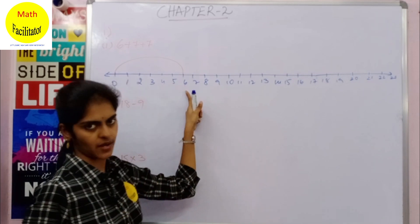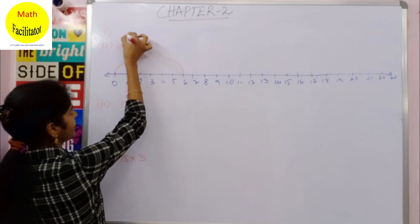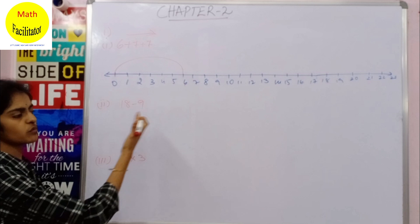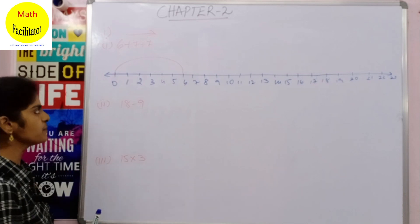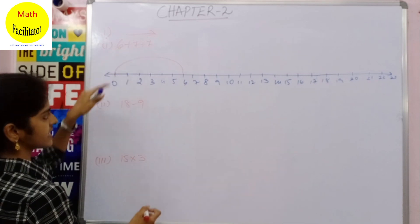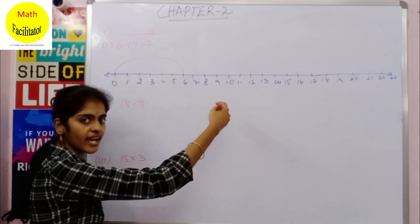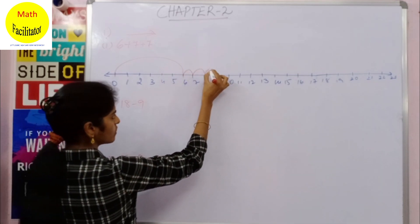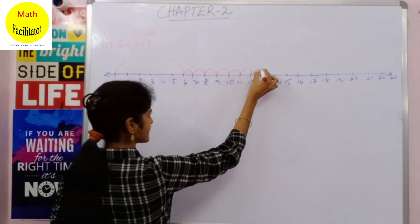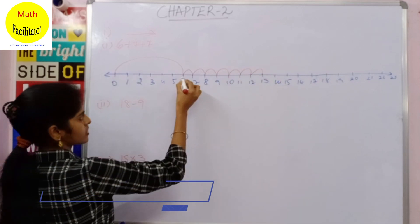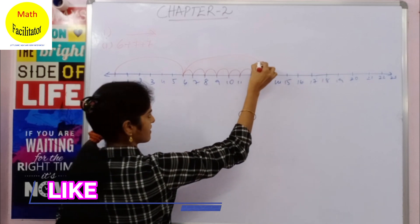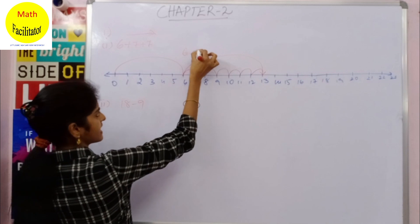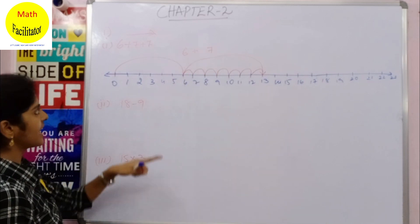You have to move 7 steps on the number line. Since you are adding, addition means you will move to the right on the number line. Subtraction means you will move to the left on the number line. So now you are adding 7 to 6, that means 7 steps you have to move to the right. So this is one, two, three, four, five, six, and this is seven. From six you have moved seven steps, so this is 6 plus 7.